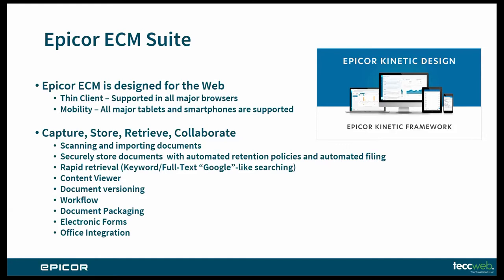The content viewer shows documents with annotations such as approval and denial stamps and DocuSign signatures. Versioning can be used to control documents that change over time — you can check in and check out documents. For example, company policies that update often can be archived and a new updated version can be published.